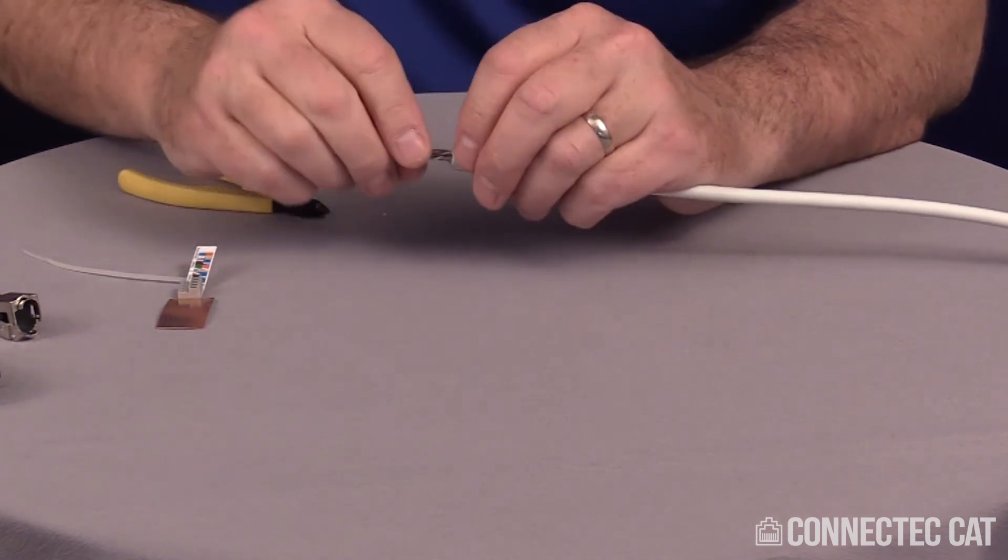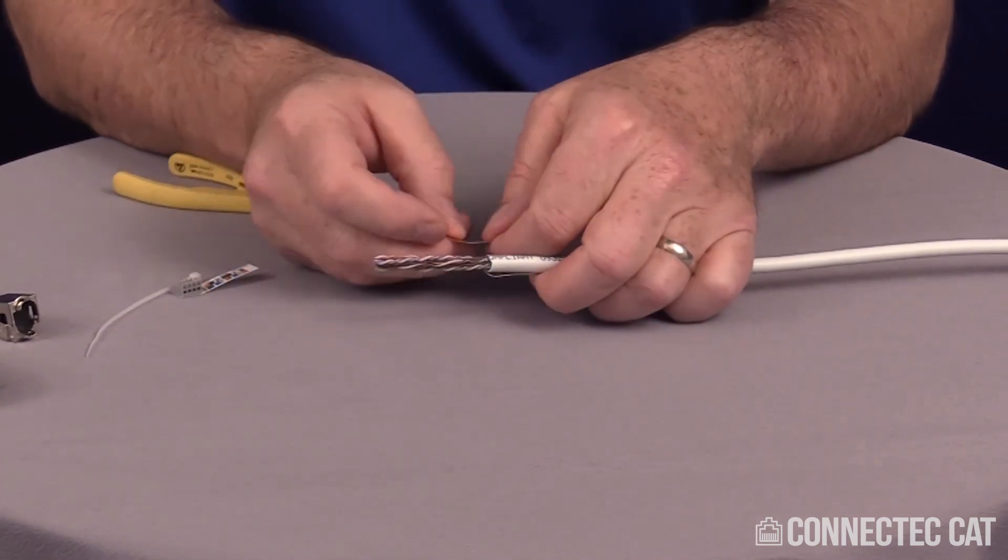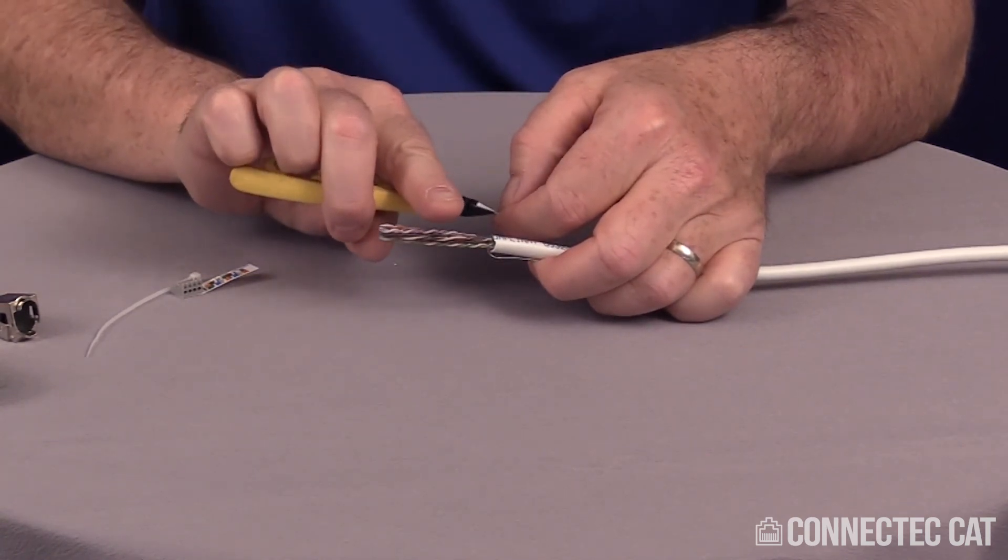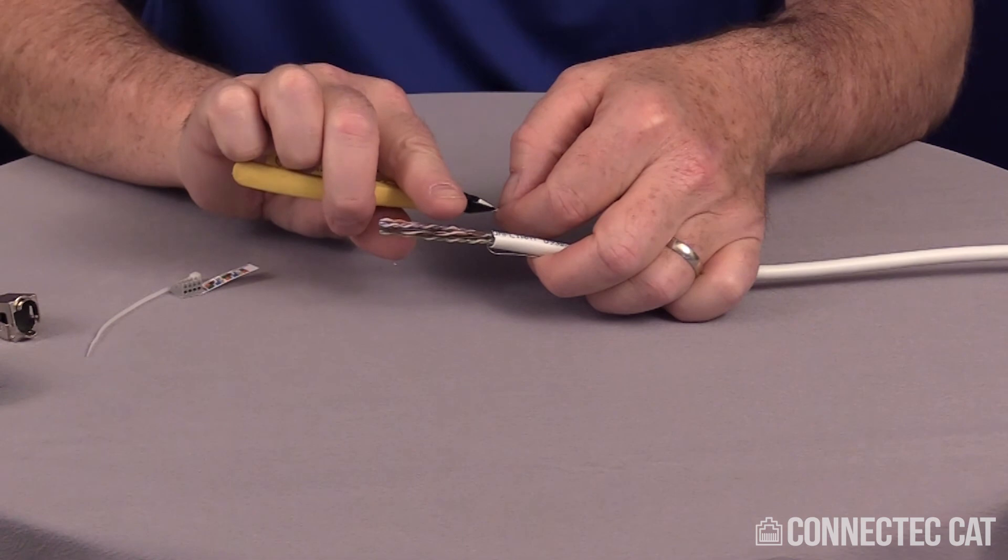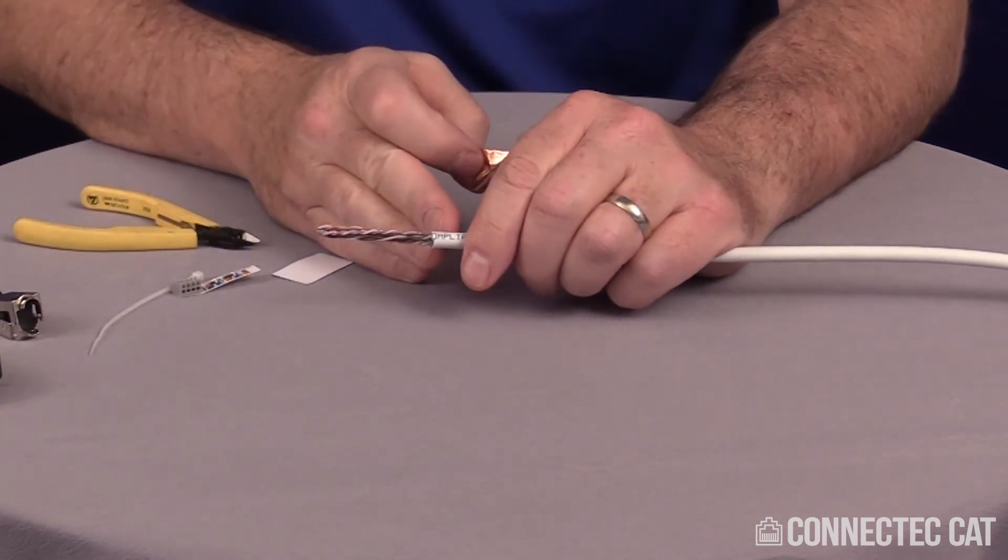Now I'm going to anchor my drain wire with the copper tape. So taking the copper tape you want to start a corner then take your diagonal cutters. Just gently grip the copper and kind of give it a little tug and it'll come right off. Now when you put the copper tape on you want to make sure that you do not go past the jacket.